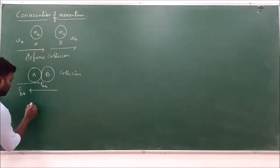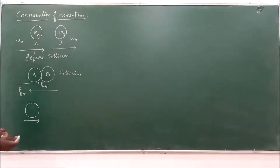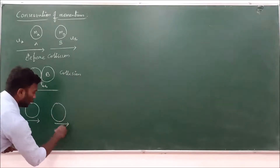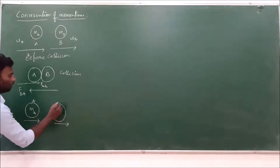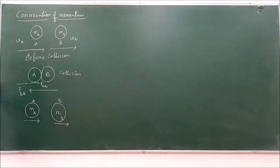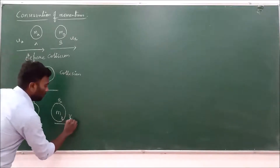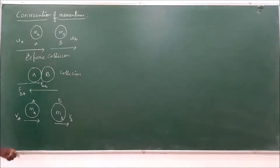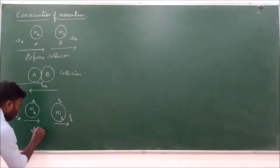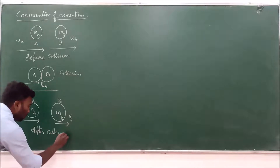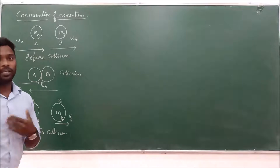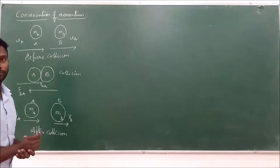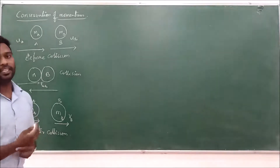After the collision, the two objects attain different velocities, having masses MA for object A and MB for object B. The velocities are VA for object A and VB for object B. This is the situation after collision. Before collision and after collision, there are some changes in their velocities, so we can see that definitely there is a change in momentum.